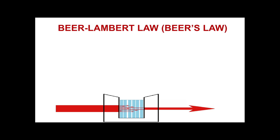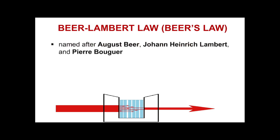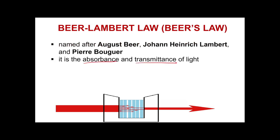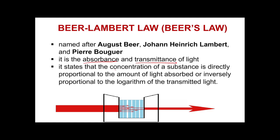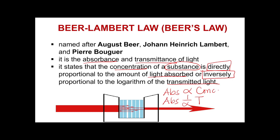The spectrophotometer follows the Beer-Lambert Law, named after August Beer, Johann Heinrich Lambert, and Pierre Bouguer. Beer's Law states that the concentration of a substance is directly proportional to the amount of light absorbed and inversely proportional to the logarithm of the transmitted light. When there is more analyte in the sample, more light is absorbed and less is transmitted. When there is less analyte, little light is absorbed and more is transmitted.